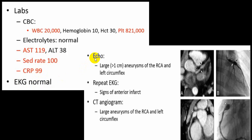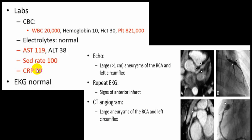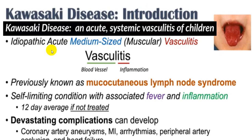When echocardiography was done, it showed a large aneurysm of the right coronary artery and left circumflex artery — this is the diagnostic clue for Kawasaki. A repeat ECG showed anterior infarct in the child, because of the aneurysm. CT angiography was done to reconfirm, showing a large aneurysm in the RCA and left circumflex. Certain clues: leukocytosis, thrombocytosis, elevated ESR and CRP (inflammatory markers), and aneurysm are clues for diagnosis of Kawasaki.